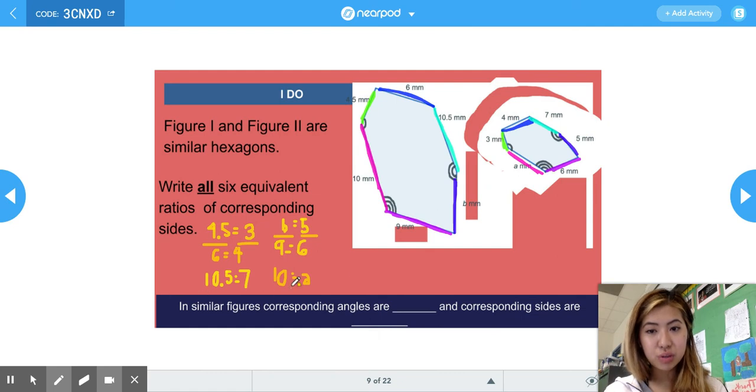So what I can do for example is combine these two so I have 4.5 over 6 is equivalent to 3 over 4. I can even do B over 9 so we have B over 9 is equivalent to 5 over 6 and I can combine the last two as well. So in similar figures corresponding angles are congruent which means are the same and corresponding sides are proportional.